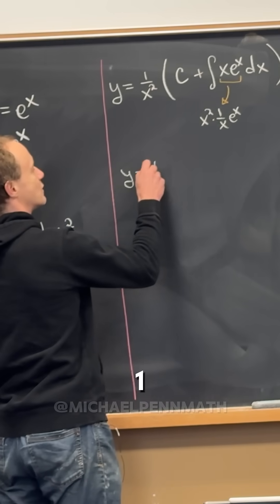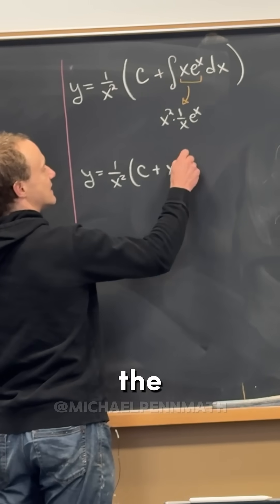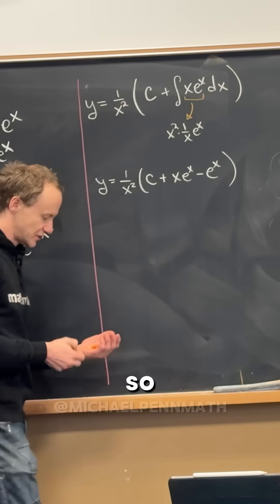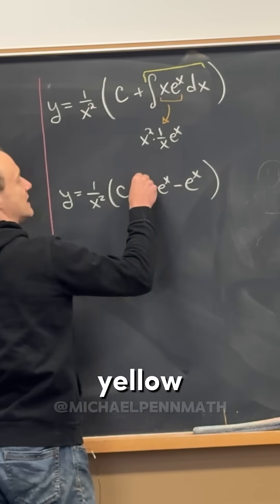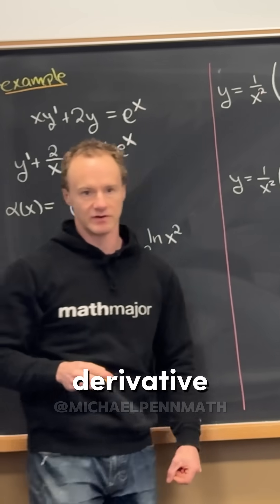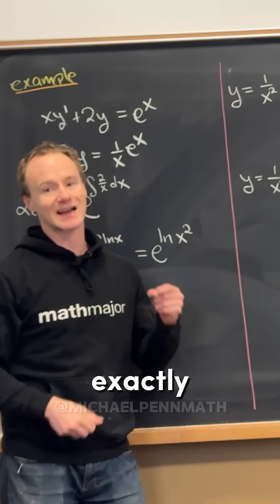So this is y equals 1 over x squared. We have a constant plus x e to the x minus e to the x. So again, this thing that I'm overlining in yellow, the antiderivative is this bit that I'm overlining in yellow by the thing that we did exactly yesterday.